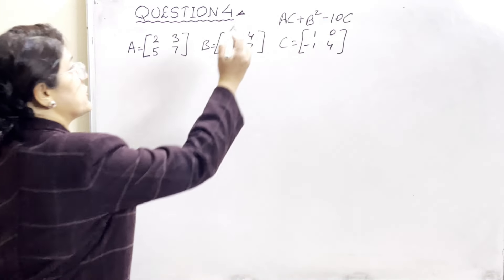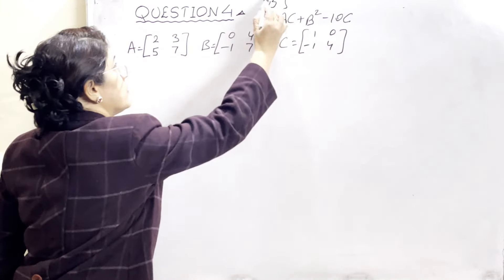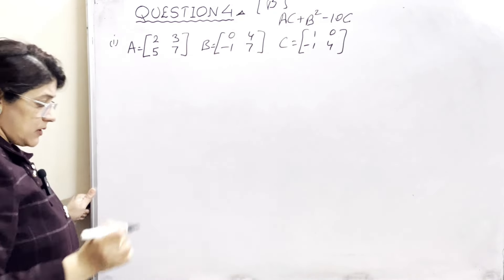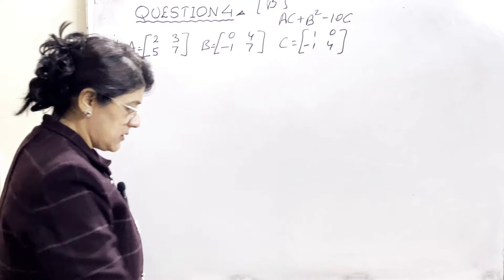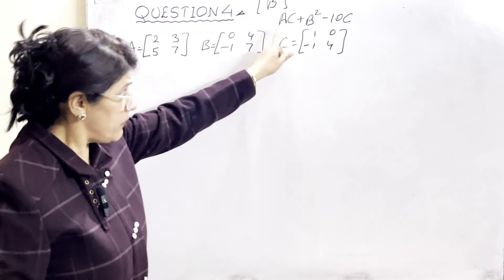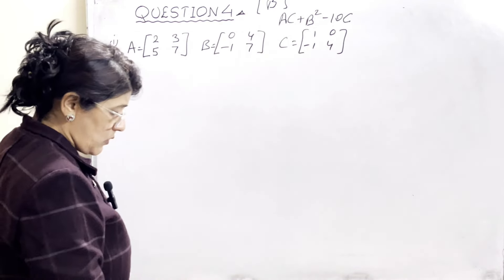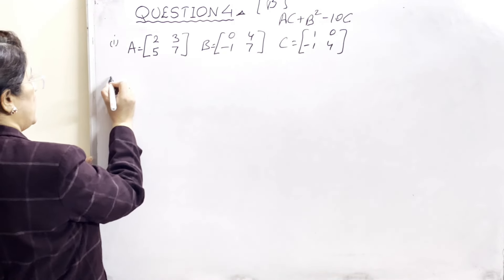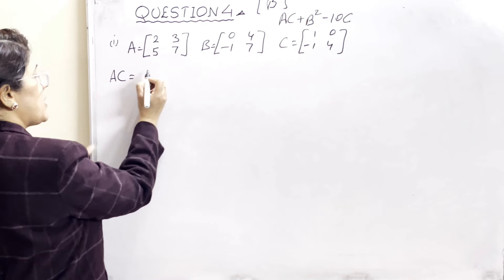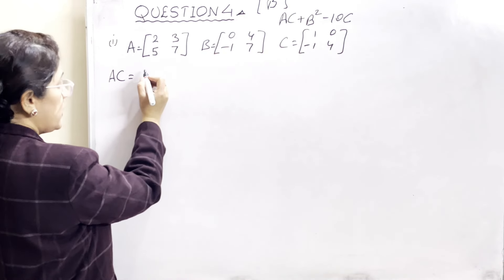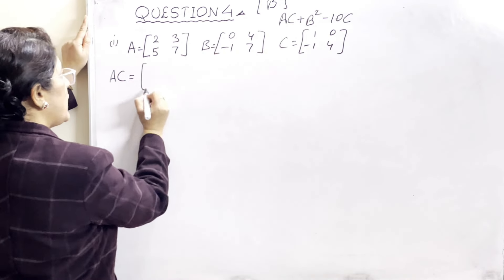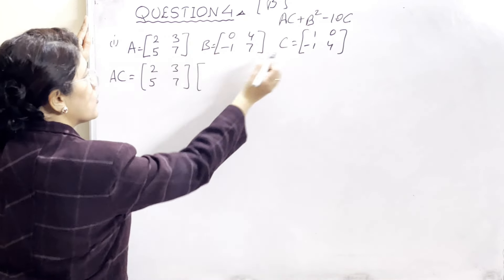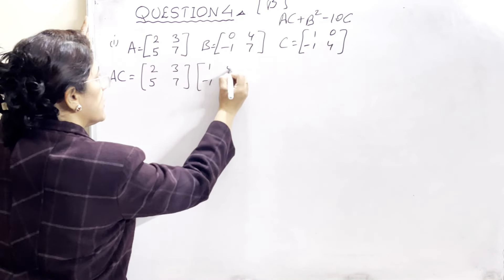Now coming to Section B, question number 4. The first part is from the matrices chapter. A, B and C three matrices are given and we need to find the value of AC + B² - 10C. So first of all, hum AC ko calculate karenge. AC mein multiplication hai, commutative nahi hoti, toh humein dhyan rakhna hai ki humne A aur C ki hi sequence mein likhna hai. Hum C ko pehle nahi likh sakte.